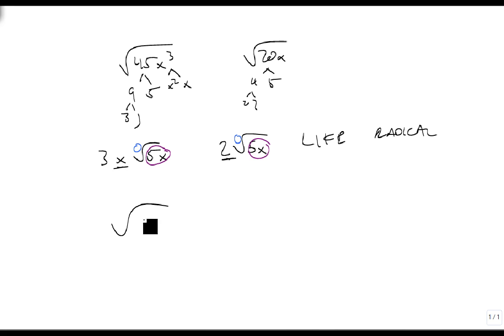Well, an example of one that isn't a like radical, let's look at square root of 12 and square root of 20. Well, we know square root of 12, we've done it already, it's 2 square roots of 3. 20 is right here, it's 2 square roots of 5.